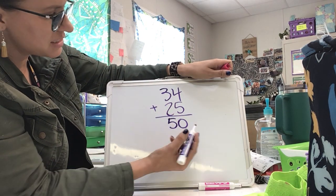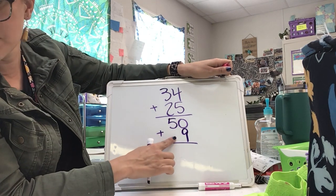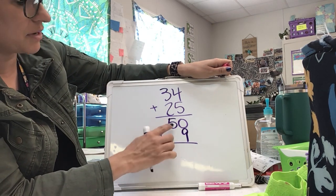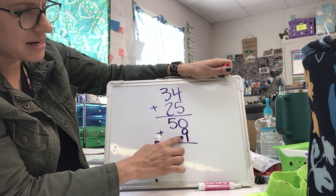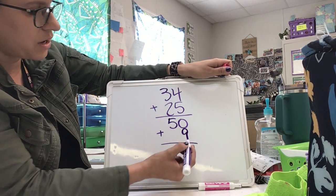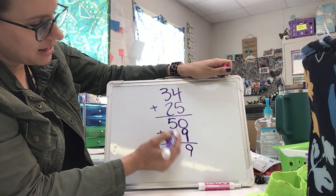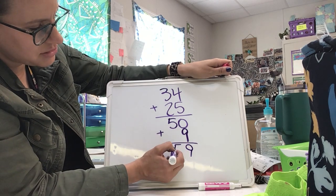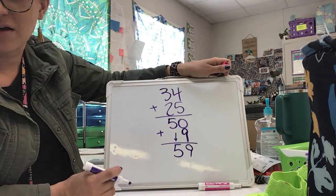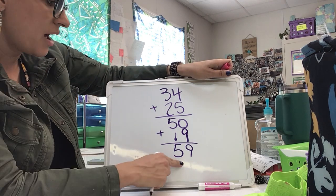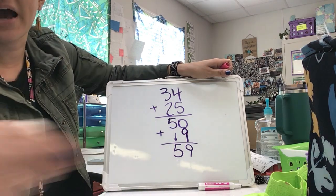Four plus five is nine, and when I'm writing it over here in my partial sums spot, I'm going to make sure I put that nine in the ones place. Zero plus nine is nine, and five tens plus no tens is five — I'm just bringing that five down because there is nothing there. The sum of 34 plus 25 is 59.